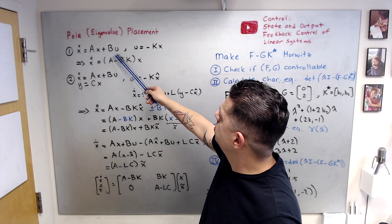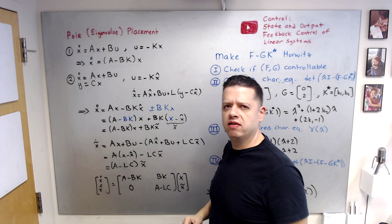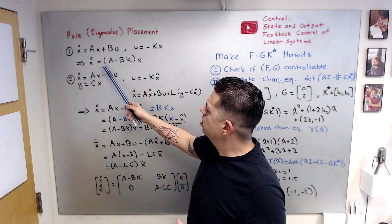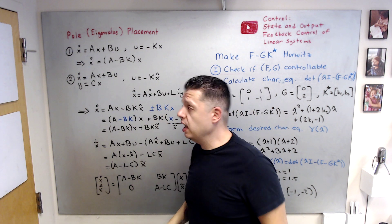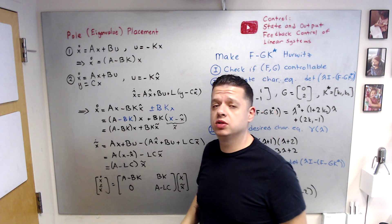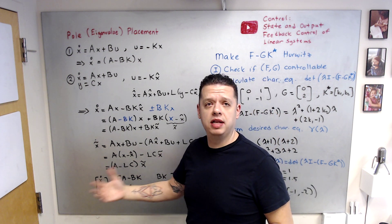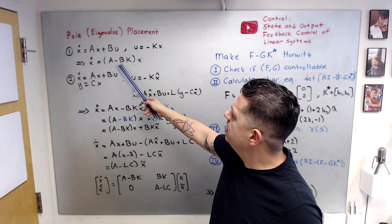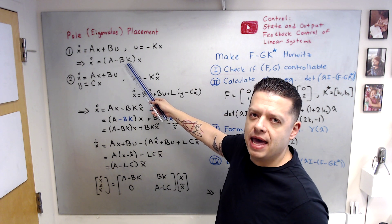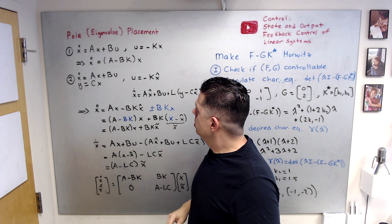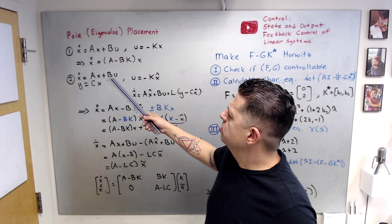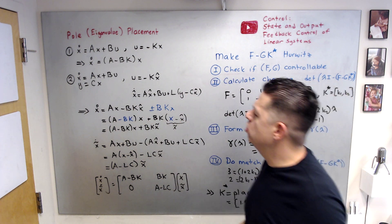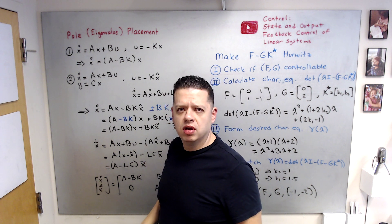Consider x_dot = Ax + Bu with u = Kx, where the state is available. For the stabilization problem, plugging this controller back in gives A - BK. You would like to make A - BK Hurwitz, meaning all poles lie on the left half plane. You need to choose gain K, where A is n×n, B is n×m, so K needs to be m×n. Pole placement or eigenvalue placement is a popular method to make A - BK Hurwitz.